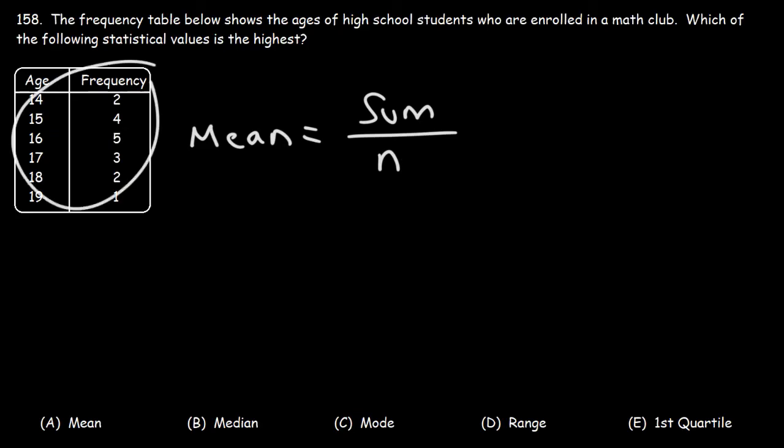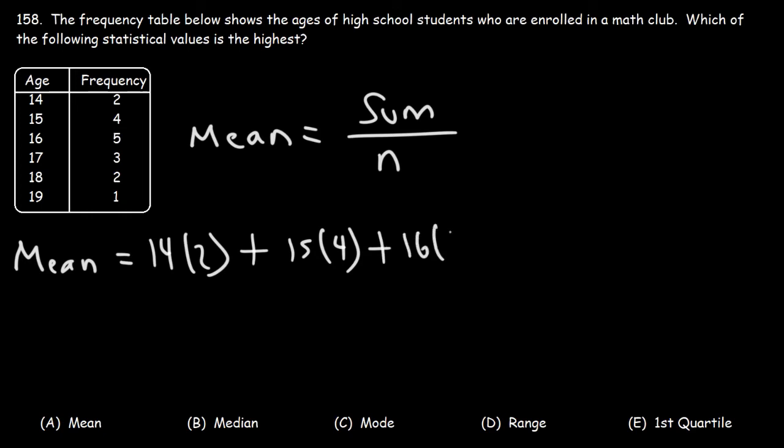Now, what we have is a frequency table. In order to calculate the mean of a frequency table, you need to take the sum of the numbers. We have two students who are 14 years old, so the sum of their ages is 14 plus 14 or simply 14 times 2. There's four students who are 15 years old, so the sum of their ages will be 15 times 4. And then just follow the pattern.